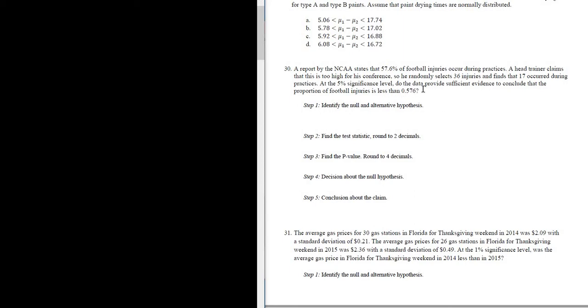Let's go ahead and read it again and write down everything we know. So we know that this trainer selected 36 injuries and found that 17 occurred during practices. So this is a question regarding a percentage and a proportion. So we know we have to find N and X.